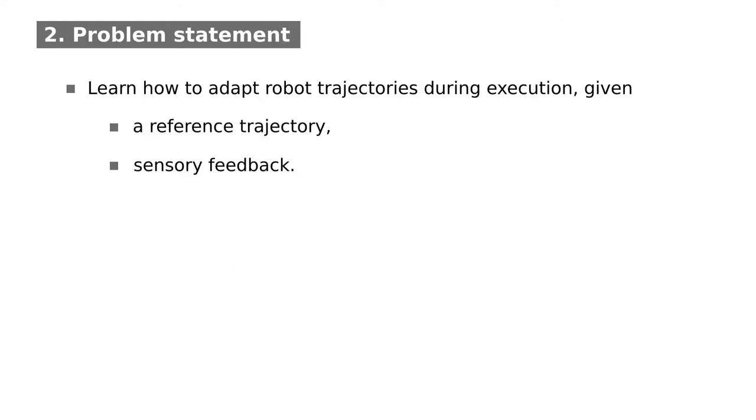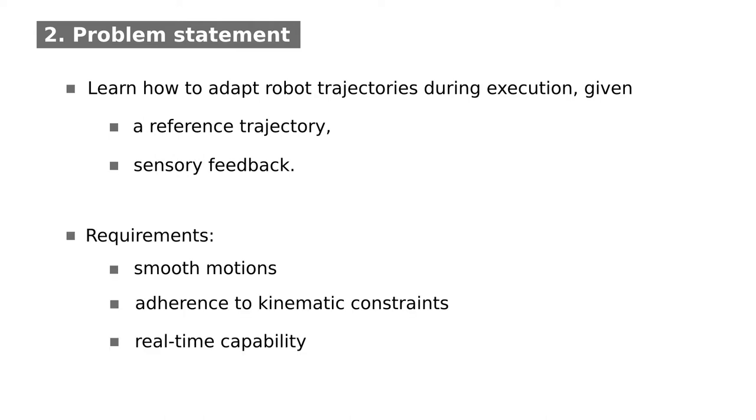In this work, we address the problem of learning online adaptations given a reference trajectory and sensory feedback during task execution. The resulting trajectories are required to be smooth and to comply with velocity, acceleration and jerk limits of the robot joints. In addition, all calculations need to be fast to ensure that online adaptations can be computed in real time.